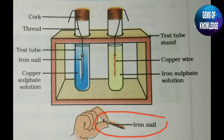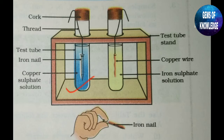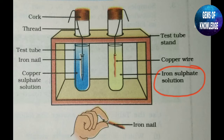In the other case, the copper wire shows no reaction - it remains the same brown color and does not change. This is because iron has the highest reactivity, so the sulfate ions from the copper sulfate solution are taken up by the iron nail. On the right side, copper is less reactive than iron, so copper cannot displace the iron from its salt solution.